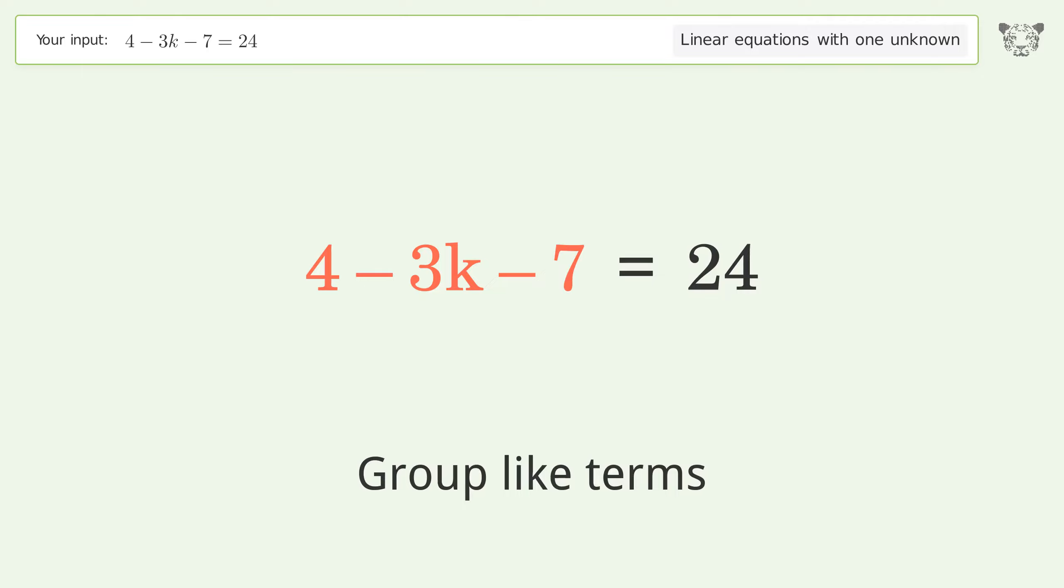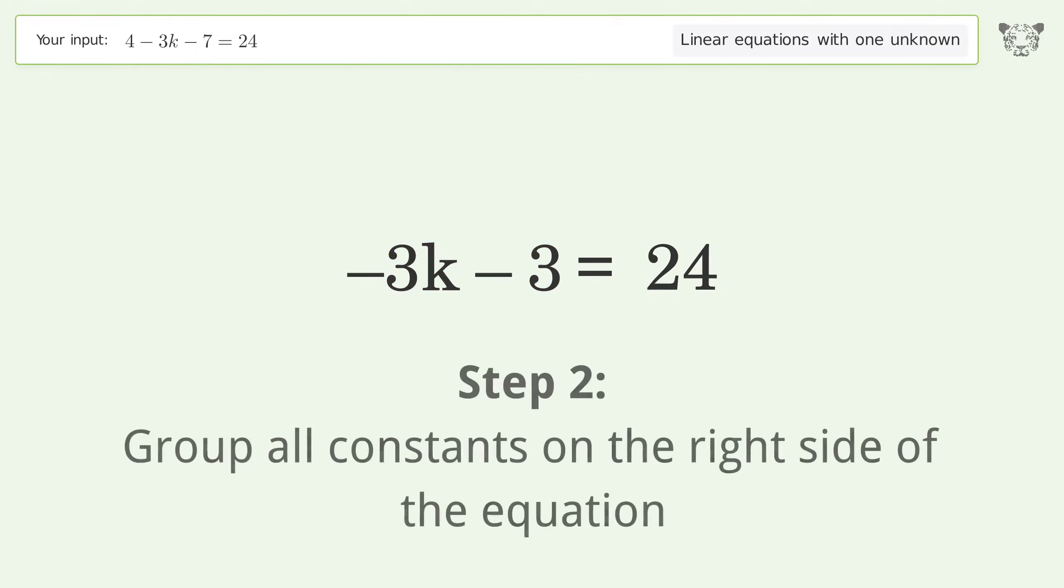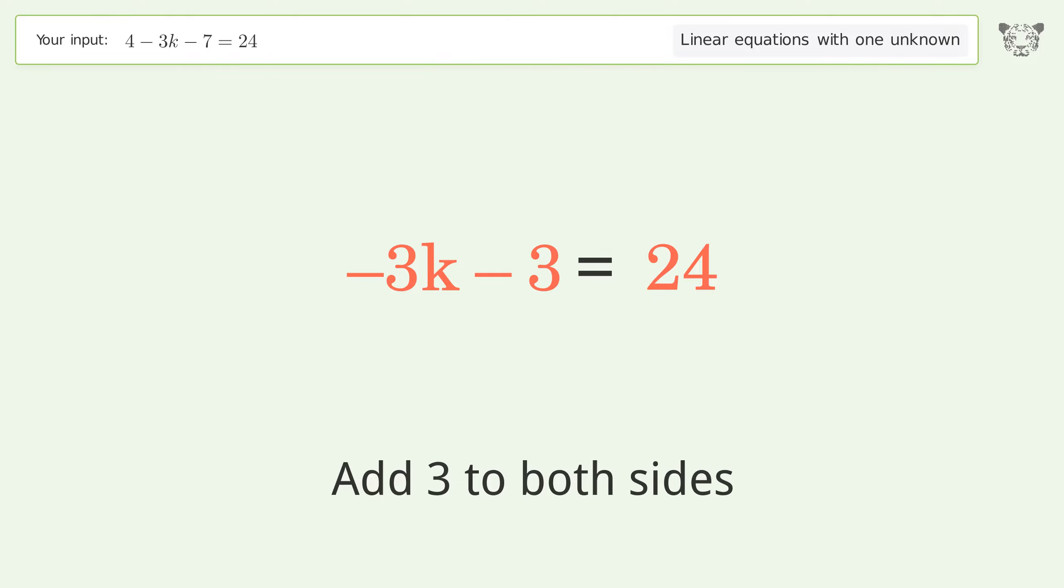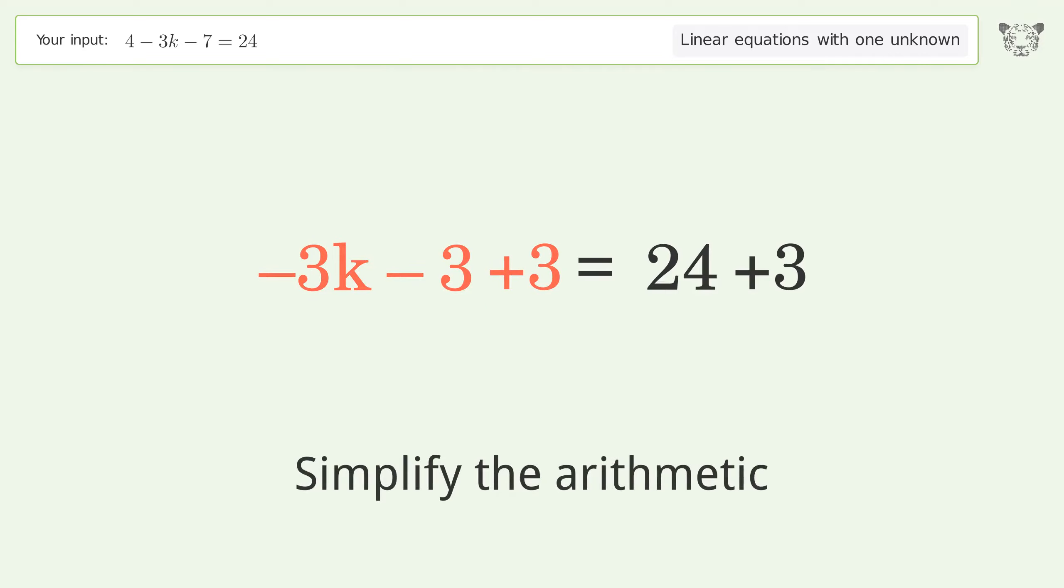Group like terms. Simplify the arithmetic. Group all constants on the right side of the equation. Add 3 to both sides. Simplify the arithmetic.